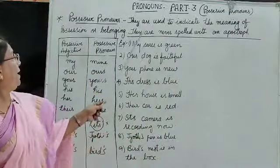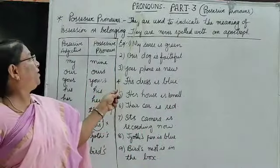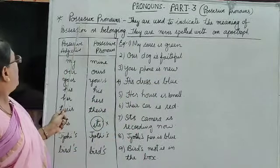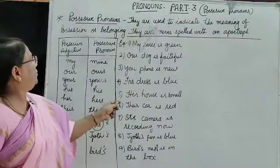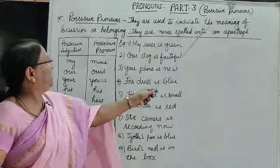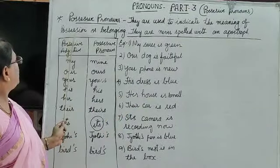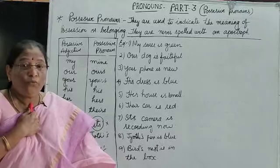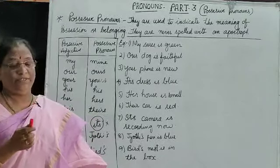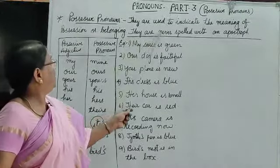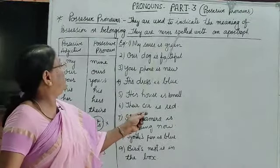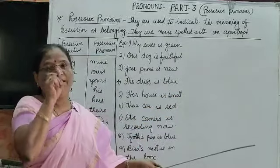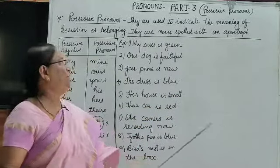Let us start part three: pronouns part three — possessive pronouns. Possessive pronouns are used to indicate the meaning of possession or belonging — someone's or somebody's. They are never spelled with an apostrophe.